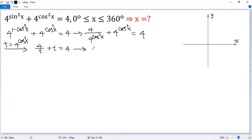Both sides multiply by t. So we get 4 plus t² equals 4t. We can turn 4t to the left side.